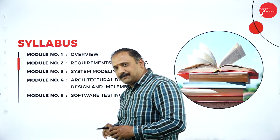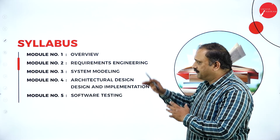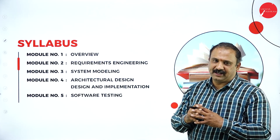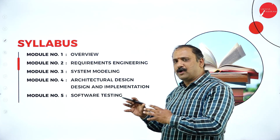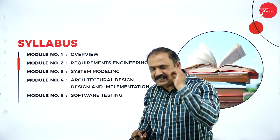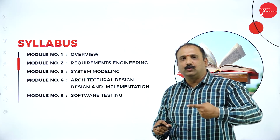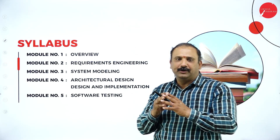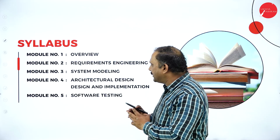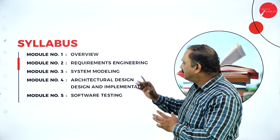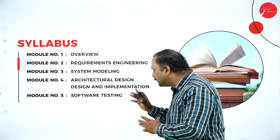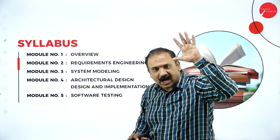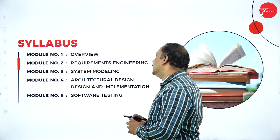Looking at the syllabus, the first module is the overview of software engineering — a very important course from a BCA standpoint, covering software models and how they are structured, followed by requirements engineering, system modeling, architectural design and implementation, and software testing. These are the five modules that will be covered in depth.